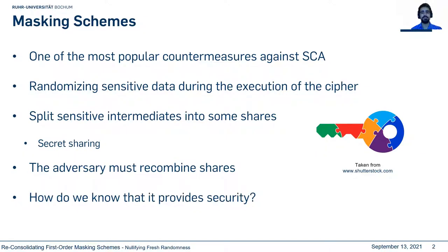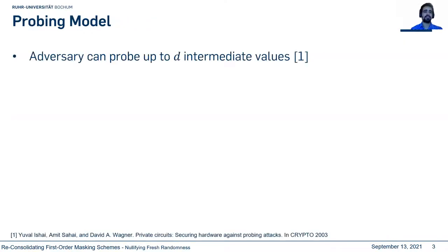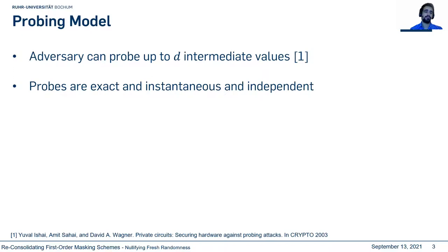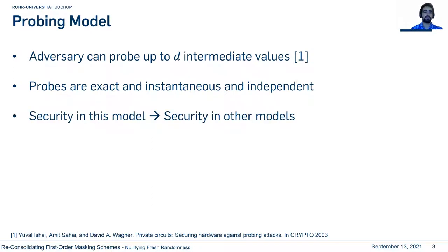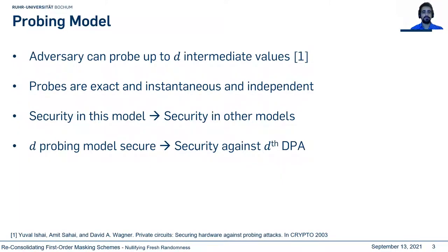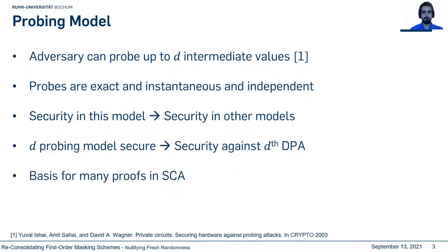How can we evaluate a given mask design? To this end, the probing model was proposed. The adversary can probe the intermediate values, and each probe is exact and independent. It has been shown that security in this model also provides security in other models. And if any combination of intermediate values does not reveal anything about the secret, then the design is secure against side-channel attacks.